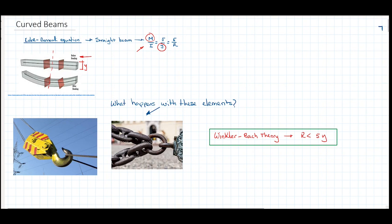But what happens when the beam is initially not straight but curved? All the assumptions taken into account in the Euler-Bernoulli equation fail. That's why there are several other ways to do it, and one of the most popular ones is the Winkler-Bach theory.